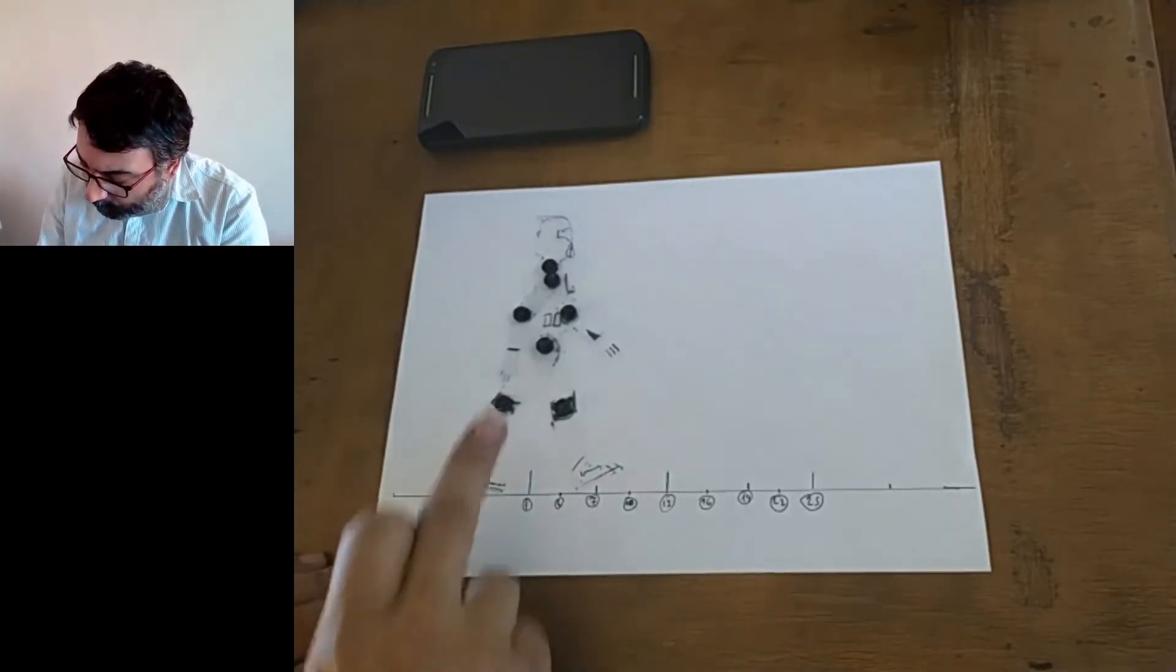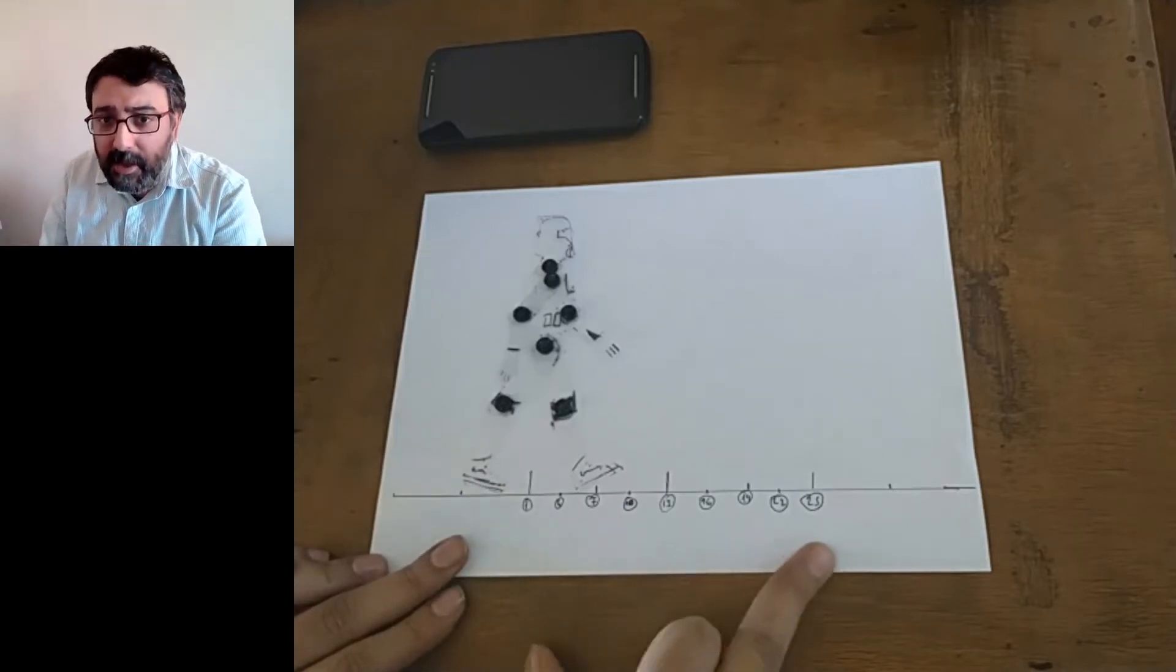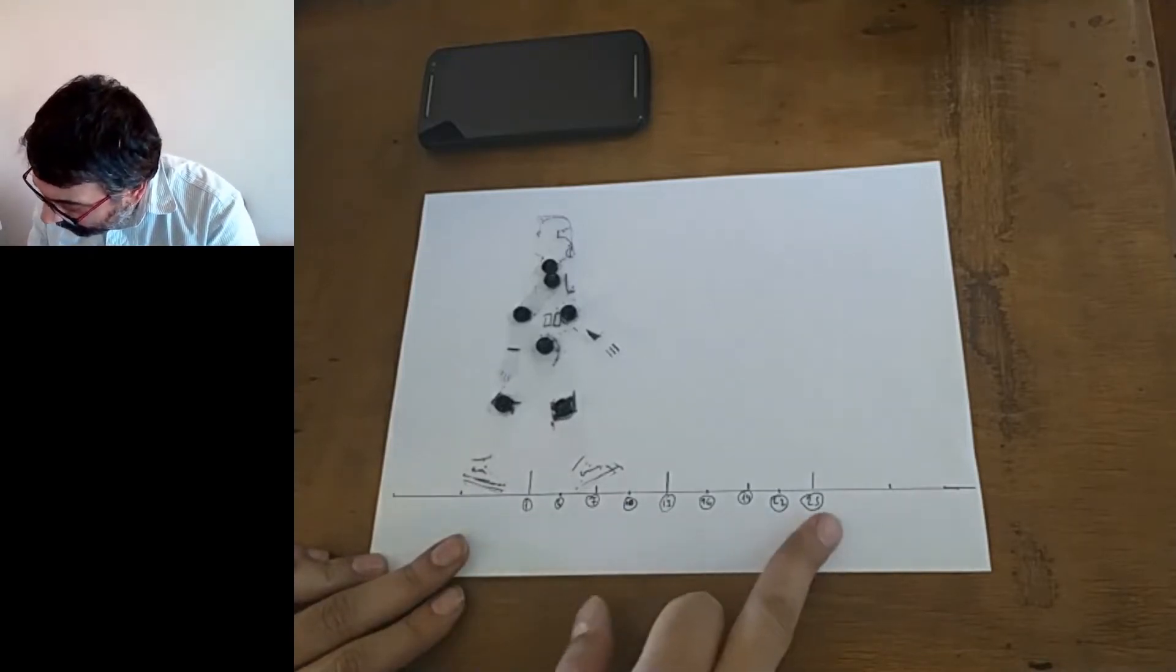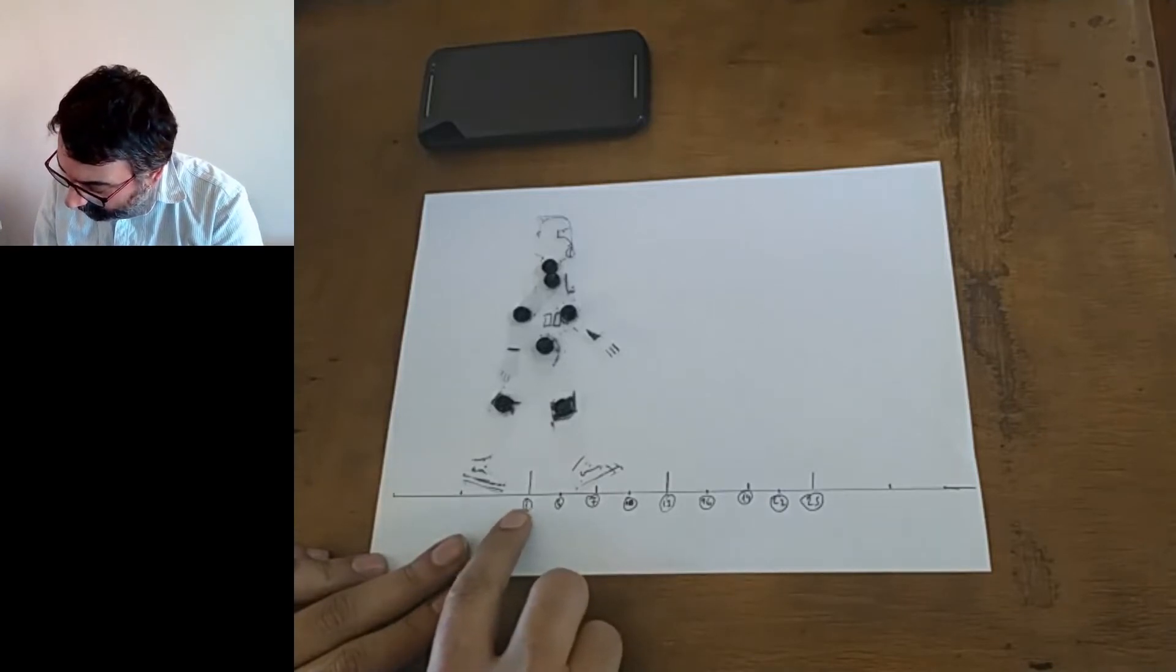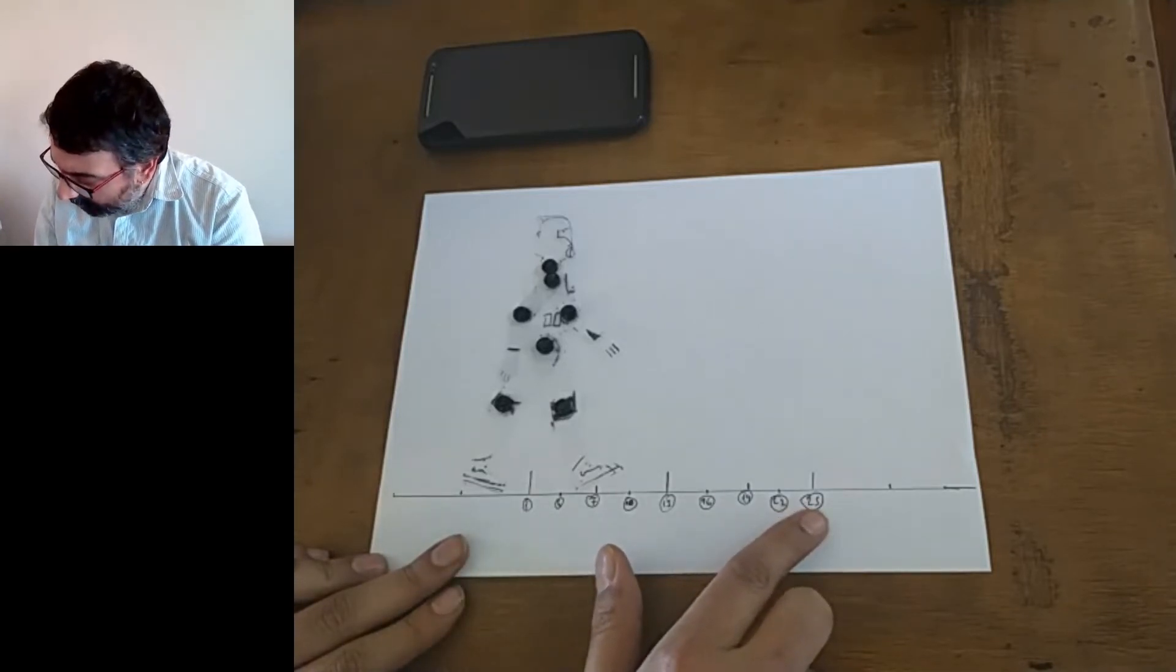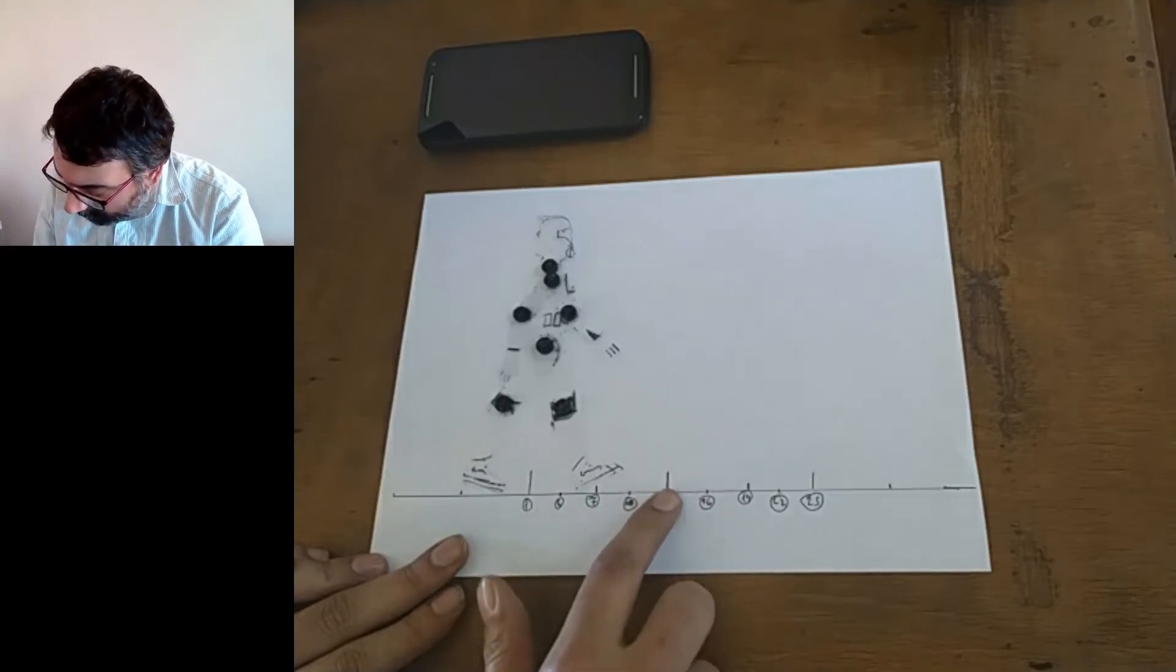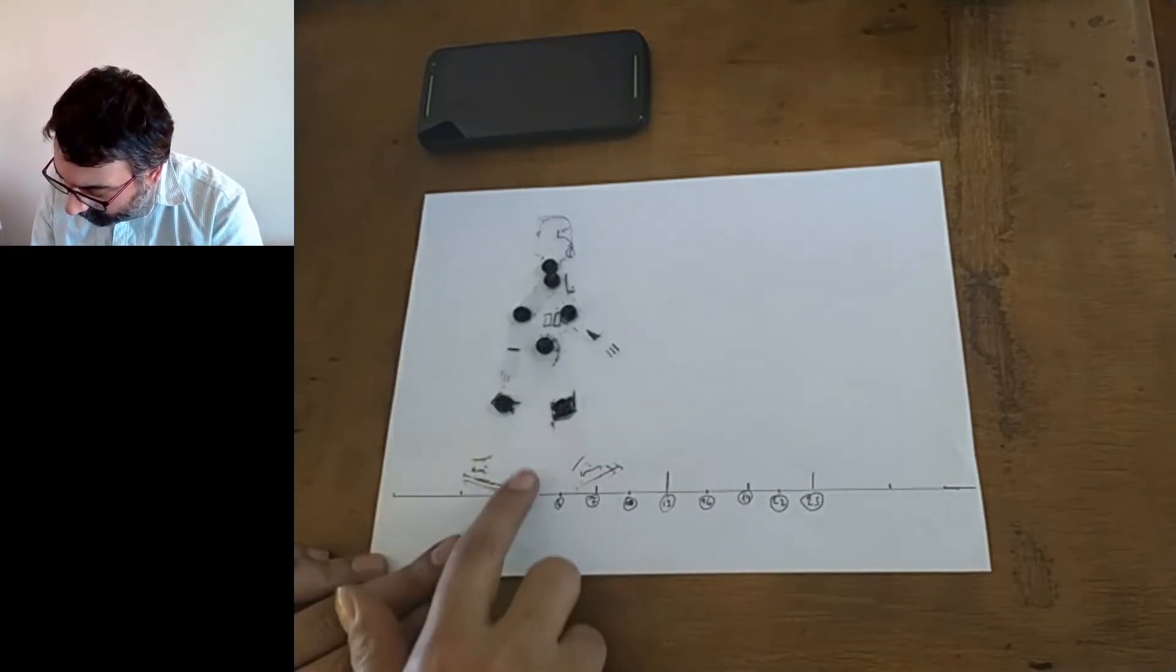FPS value of this project is 24 frames per second, so the movement will be happening in 1 second. I draw a 14 centimeters line on the paper representing two 7 centimeter steps.